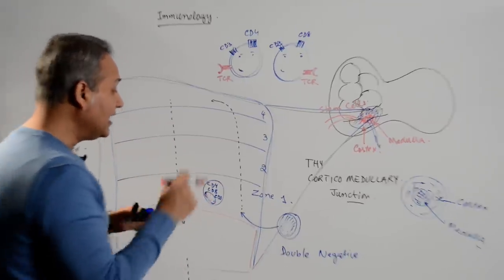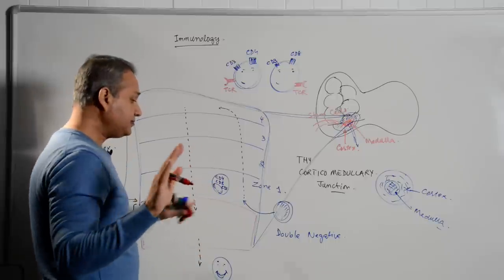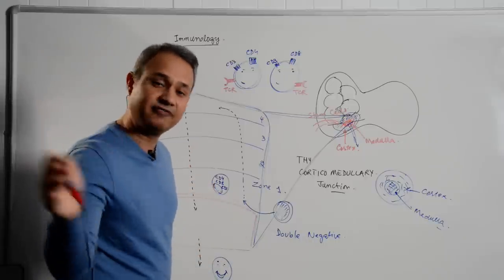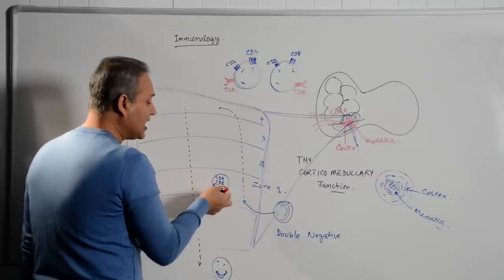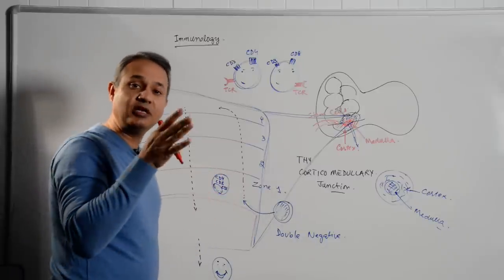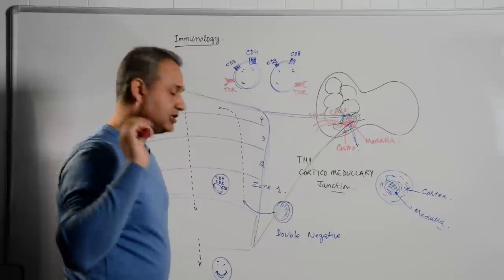It has CD3, CD4, CD8, all of them inside the cytoplasm, nothing on the surface. So that is why it is double negative. What does double negative mean? Both the things, CD4 and CD8, are absent on the surface. Double CD4 and CD8, two negative, absent.